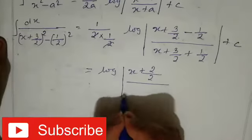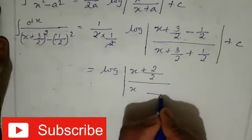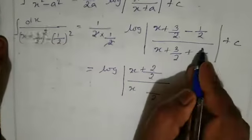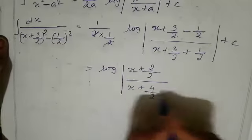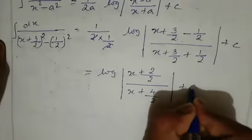Denominator, just write x. Here also we have to take LCM, 3 plus 1 is 4, so plus 4 divided by 2 plus C. Now we can cancel 2 and 2.